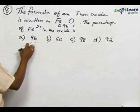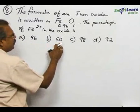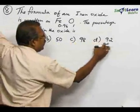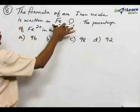Options are A) 96, B) 50, C) 98, and D) 92. So, it is a non-stoichiometric oxide.